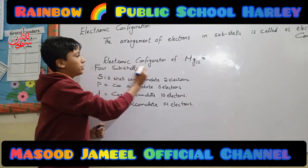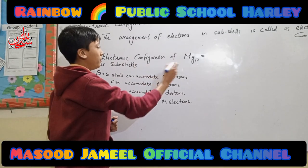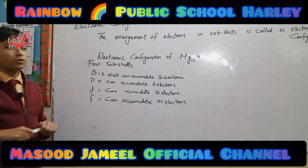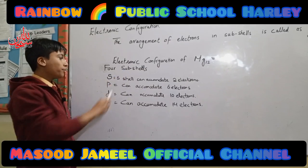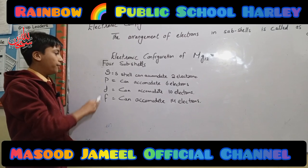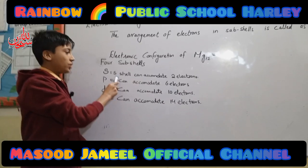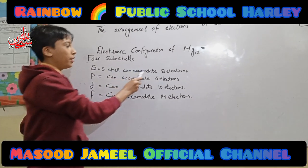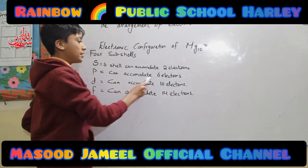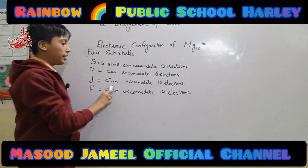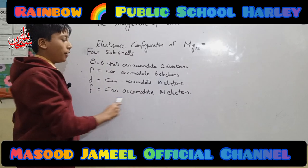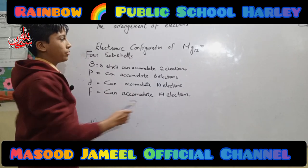The electronic configuration of Mg-12 equals to — but first, I will introduce you about sub-shells. There are four sub-shells: S, P, D, and F. The S sub-shell can accommodate two electrons. The P sub-shell can accommodate six electrons. The D sub-shell can accommodate ten electrons. The F sub-shell can accommodate fourteen electrons.